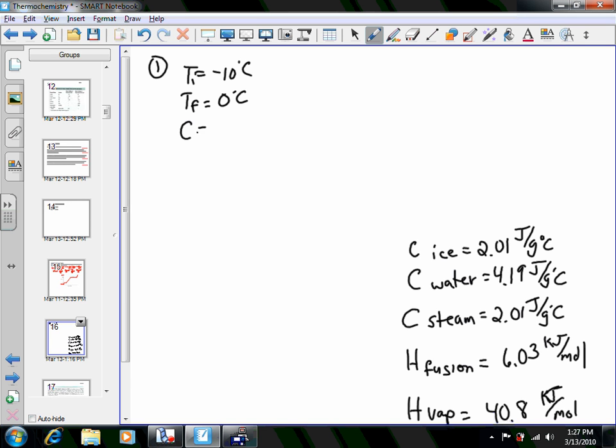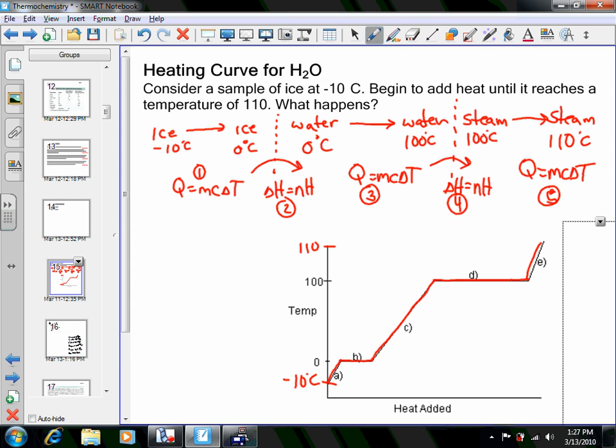The heat capacity, because we're heating it, heat capacity of ice is 2.01 joules per gram degrees Celsius. And we need to know what the mass of the ice was. I don't remember if I defined that. Let's assume we have a mass of ten grams of ice.